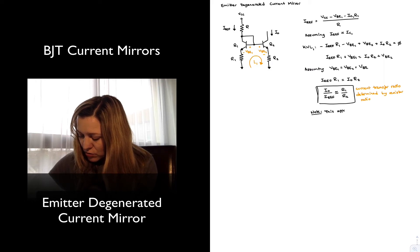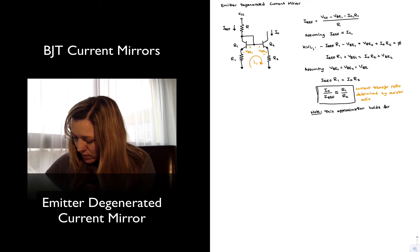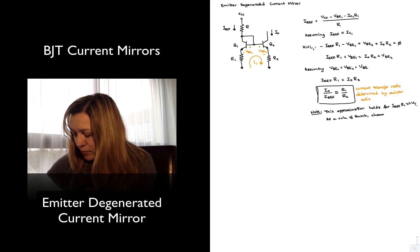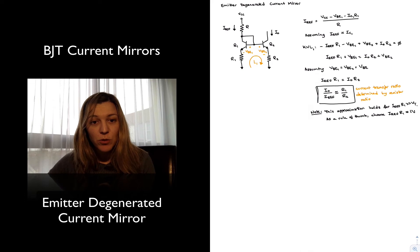This approximation holds for IREF R1 greater than the thermal voltage, and as a rule of thumb, when we are designing, we'll choose IREF times R1 to be approximately equal to one volt. Why do I say when we're designing? Well, if we're analyzing a circuit, it's going to come with a value of R1, and so that current is just going to be what it is. But if we are designing, and if we're doing good design to make the circuit robust, then we will want to select an R1 value so that that condition is met.